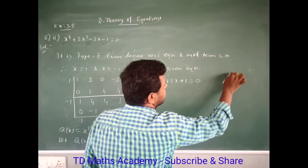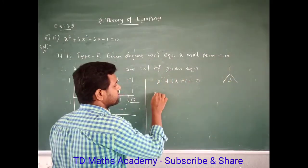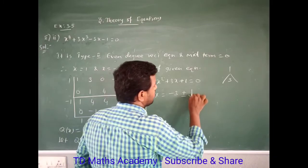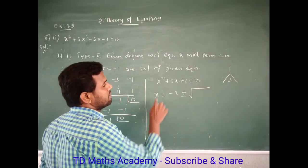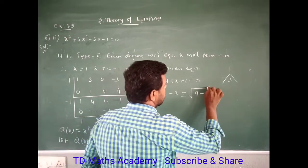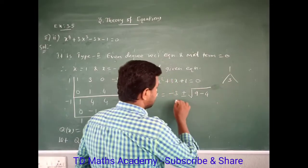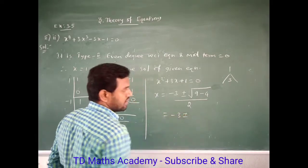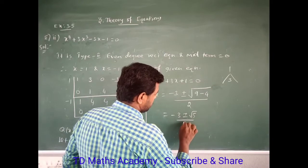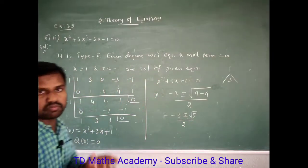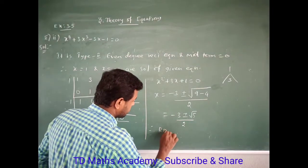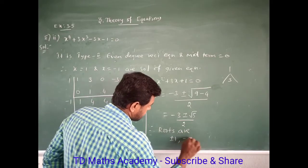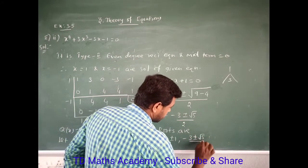Applying the quadratic formula: x = (-b ± √(b² - 4ac)) / 2a. Here b = 3, so -b = -3; b² = 9; 4ac = 4×1×1 = 4; so discriminant = 9 - 4 = 5. Therefore x = (-3 ± √5) / 2. This gives two more solutions.